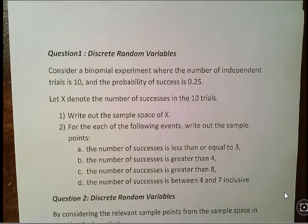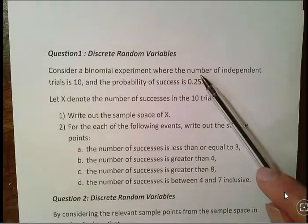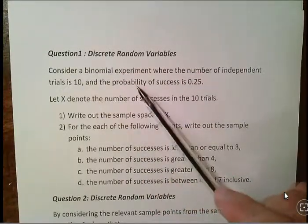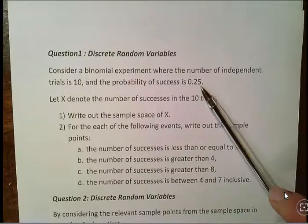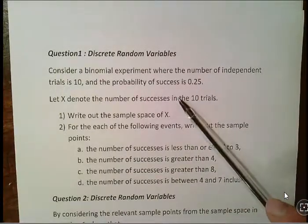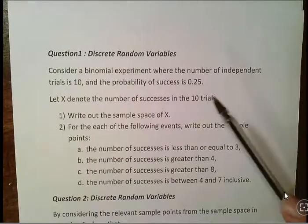In this presentation we're going to look at discrete random variables. This is going to be a short exercise because it's got one point to it and one point only. Consider a binomial experiment where the number of independent trials is 10 and the probability of success is 0.25.